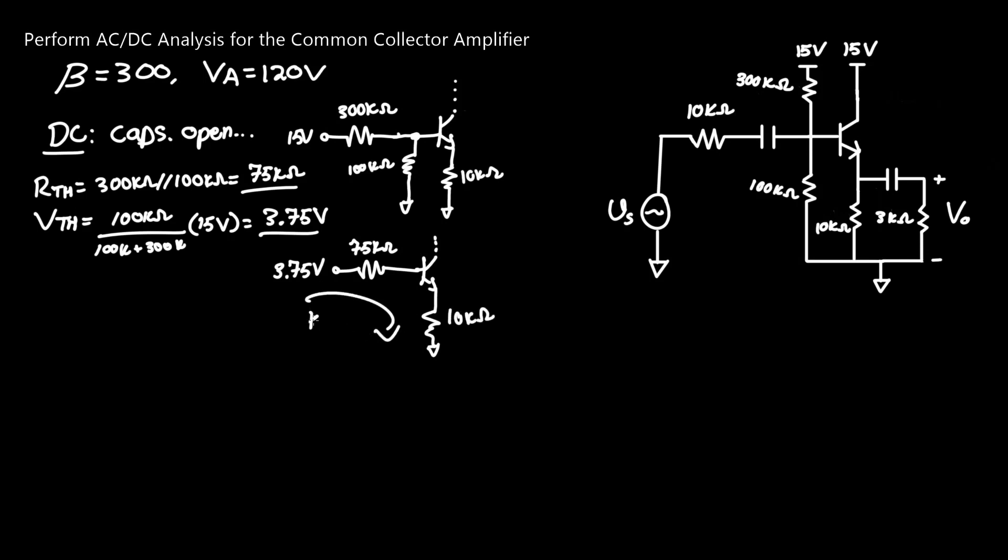We can now perform KVL. This equation would be 3.75 volts equals 75 kilo ohms times the current going through here, which is IB, or through the base of the BJT, plus 0.7 volts, which is the amount of voltage required to go from the base to the emitter, plus 10 kilo ohms times IE. As you know, IE equals beta plus 1, IB. We know that beta is 300, so it would be 301 times IB. So plugging that in here, so we have only one variable, IB, instead of two variables, we have 301 times IB.